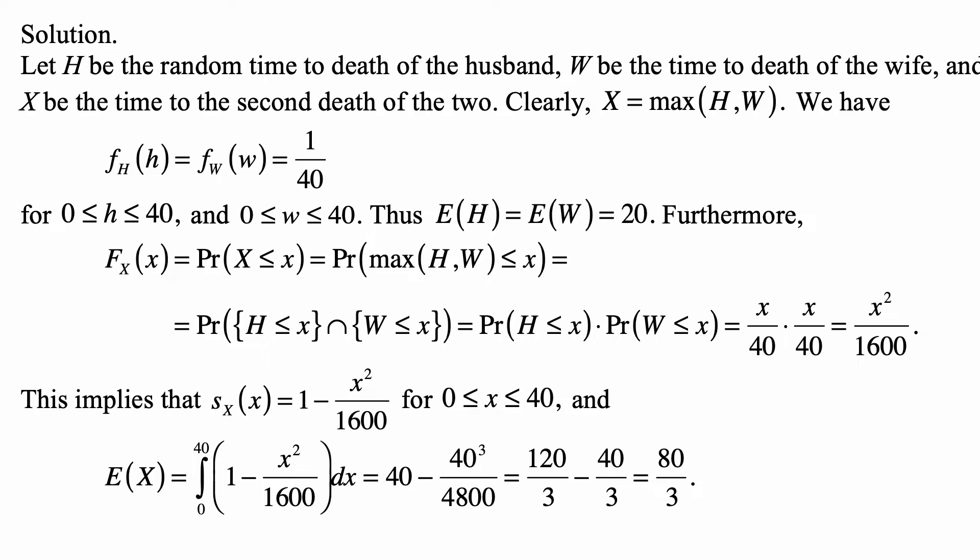We know that the density of H and the density of W is 1 over 40 because it's uniform distribution from 0 to 40. And then we know that the expected value of H is equal to the expected value of W, which is 20 at the midpoint of the interval from 0 to 40.